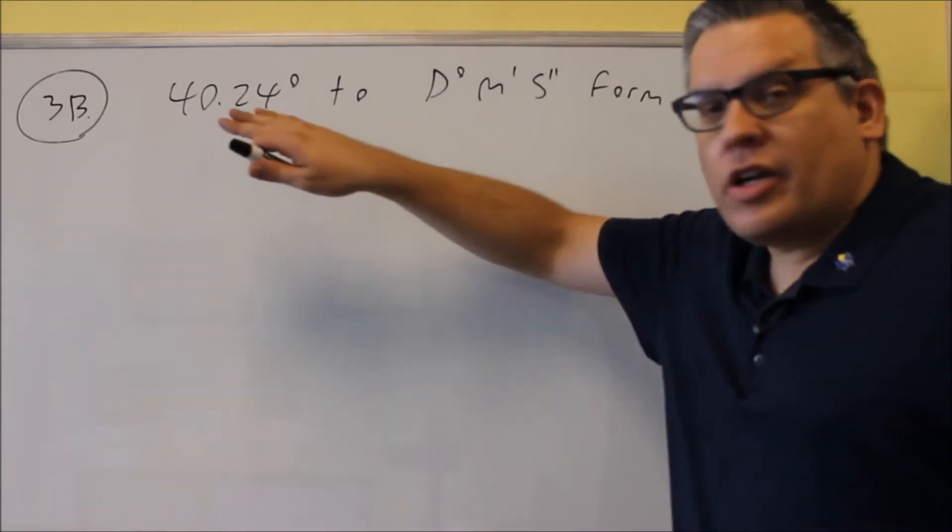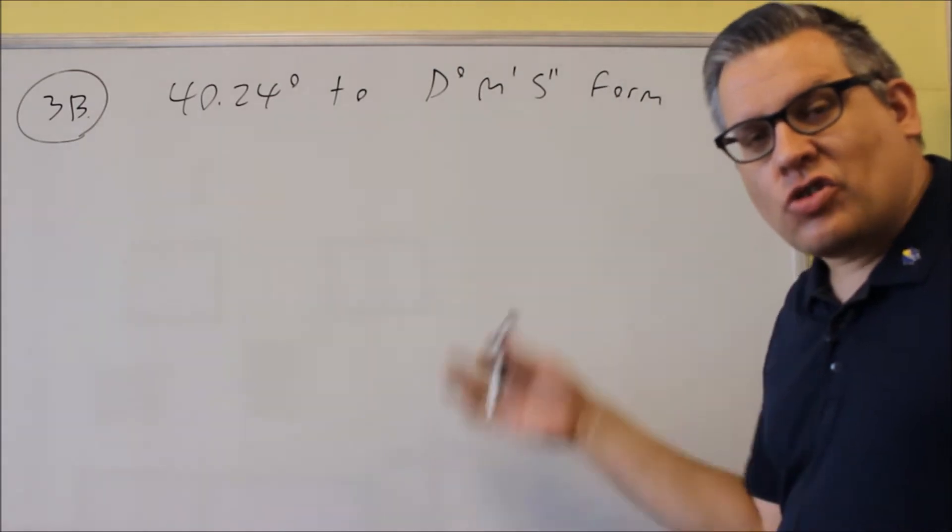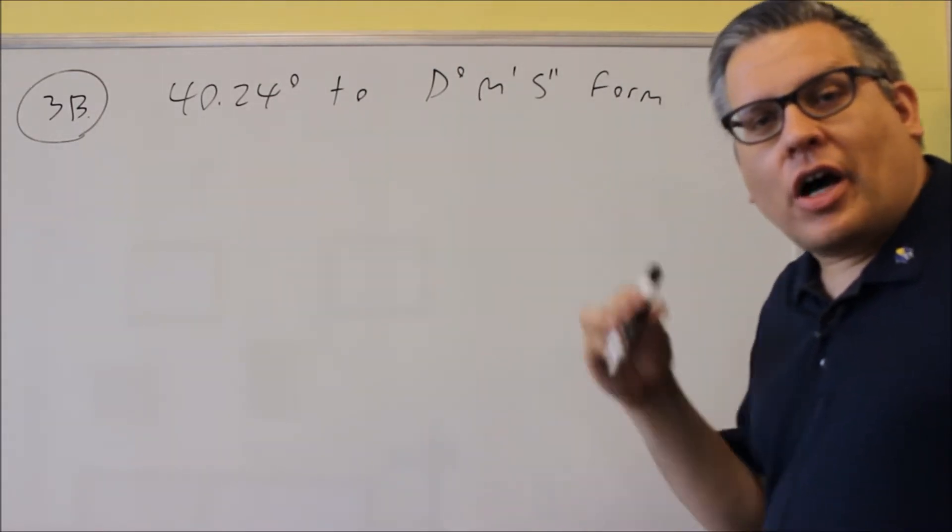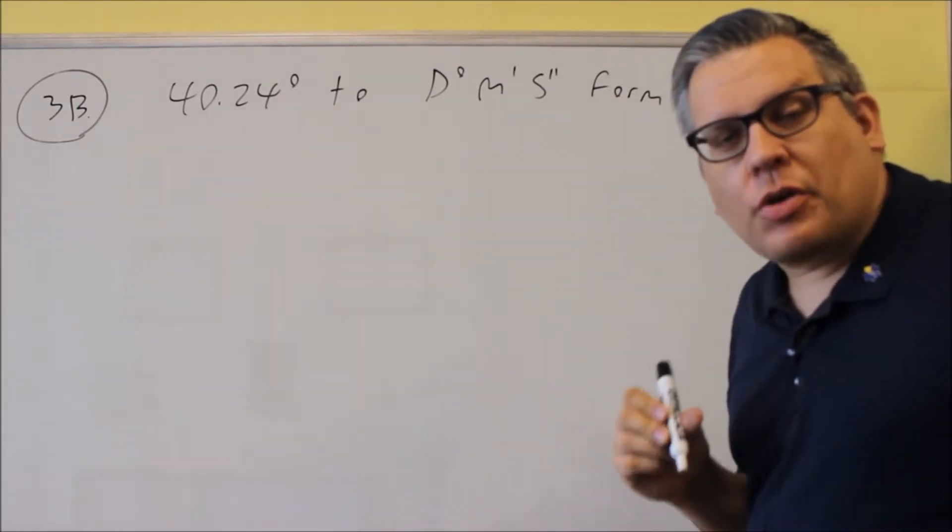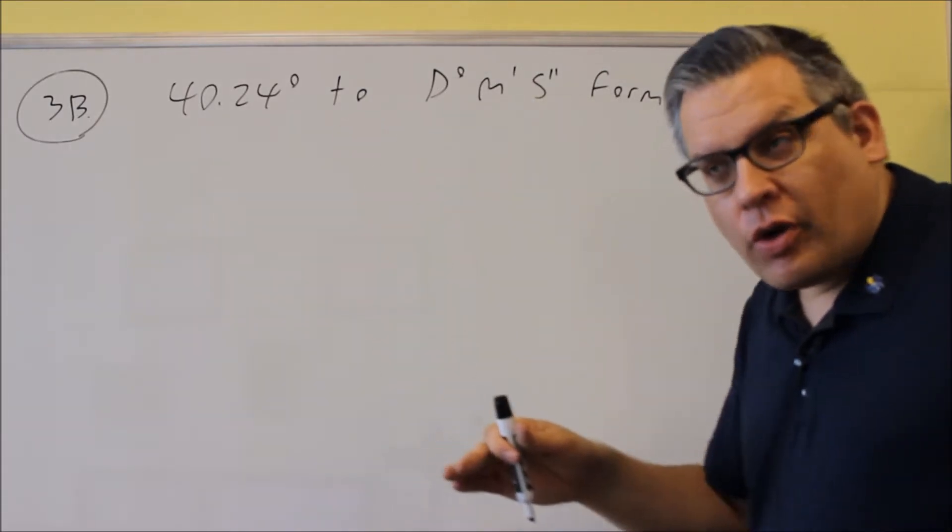For 3B, it asks us to convert a decimal degree into degrees, minutes, seconds. So it's just the opposite of what we did for A. On the test, you want to make sure you know how to do both of these types of problems, converting one way and converting the other way.